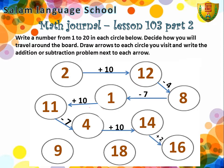From 14 to 16, we add 2. Then from 16 to 18, we add 2 as well: 16 plus 2 equals 18. The last one: 18 becomes 9. The number is getting smaller, so we do a subtraction operation. 18 minus 9 equals 9.